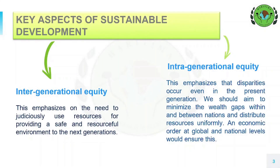Now sustainable development has two key aspects: intergenerational equity and intragenerational equity. Often there is a confusion among students about the meaning of inter and intra. So inter means between and intra means within. The two key aspects of sustainable development are equity between generations and equity within the generation. Intergenerational equity, or equity between generations, emphasizes on the need to judiciously use resources for providing a safe and resourceful environment to the next generation. It stresses on minimization of exploitation of natural resources so that the future generation need not suffer.